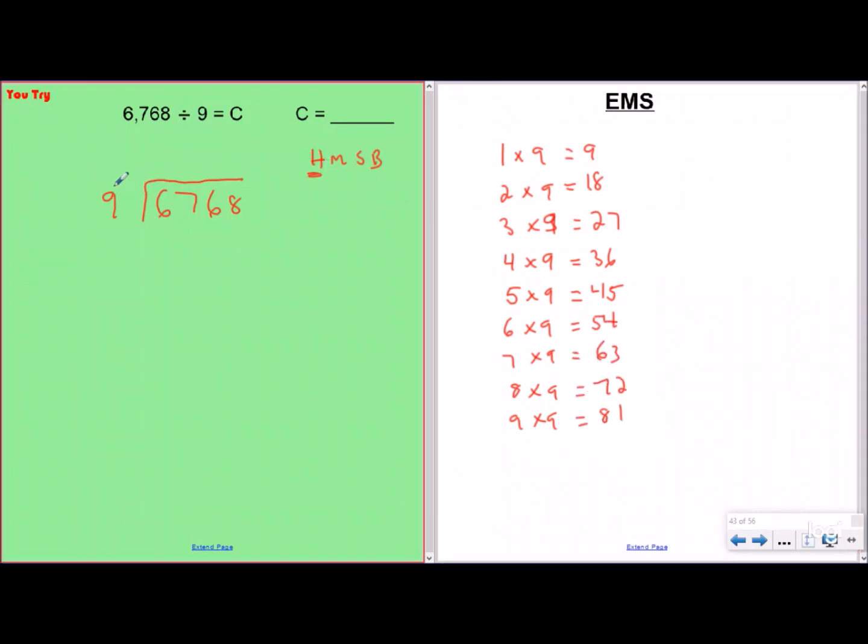So now we're going to start with how many groups of nine fit into six? Well, the answer for that would be zero because nine is bigger than six. I multiply, subtract, and bring down. Now I start all the way back over. How many groups of nine go into 67? Well, I can't use eight because that's too big. I need to use seven, which is perfect. So I'm going to use seven right here. I multiply, which I've already done over here, that's 63. I subtract, I get four, and I bring down. If you notice, I kind of do all four steps in a row and I don't stop until after I bring down.